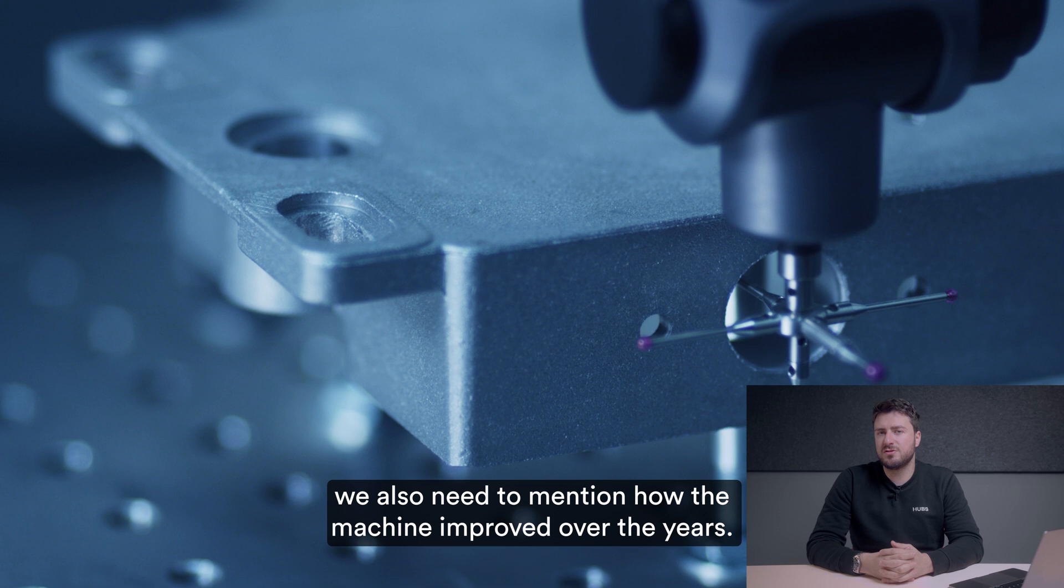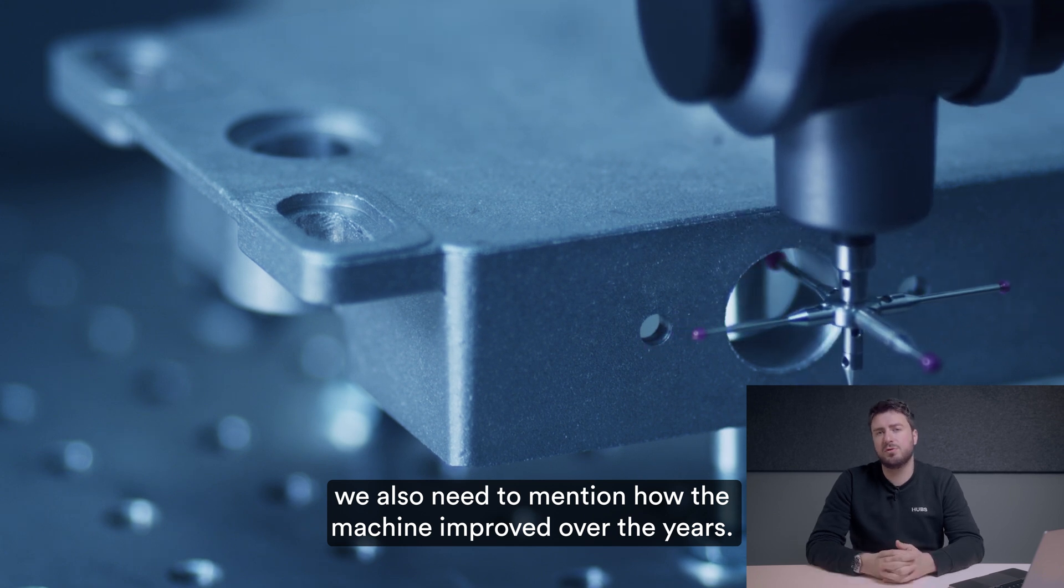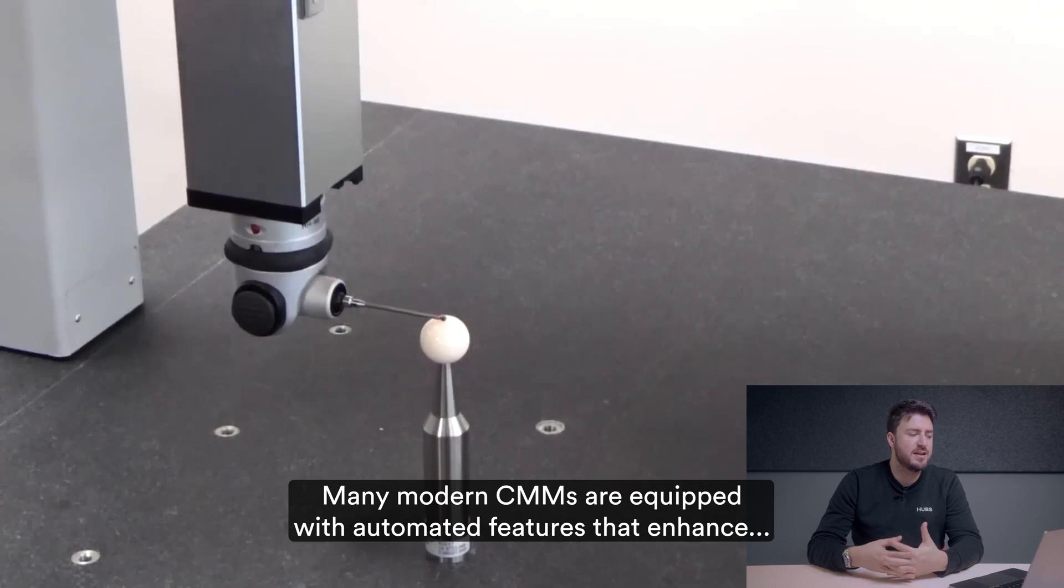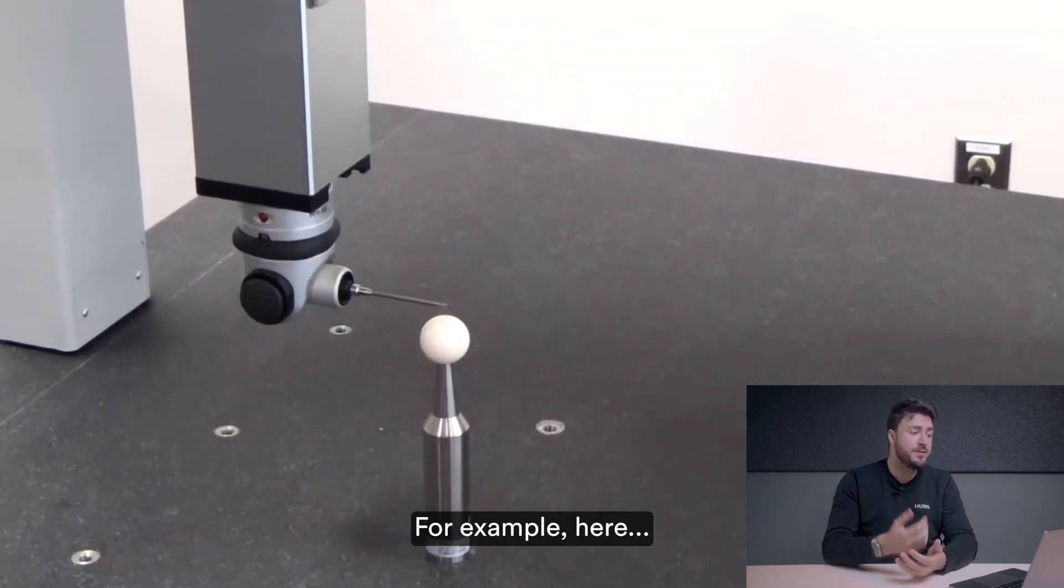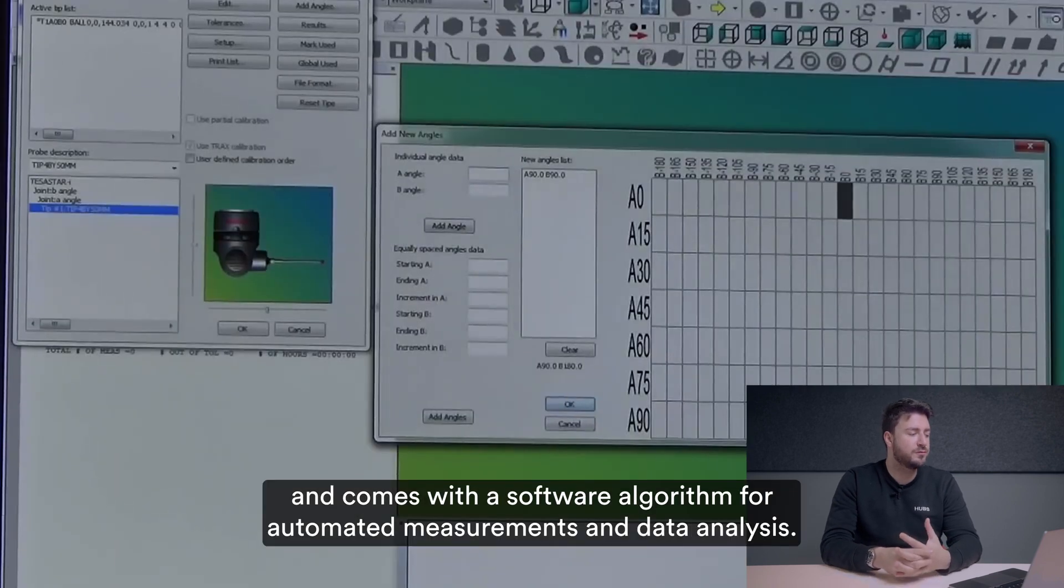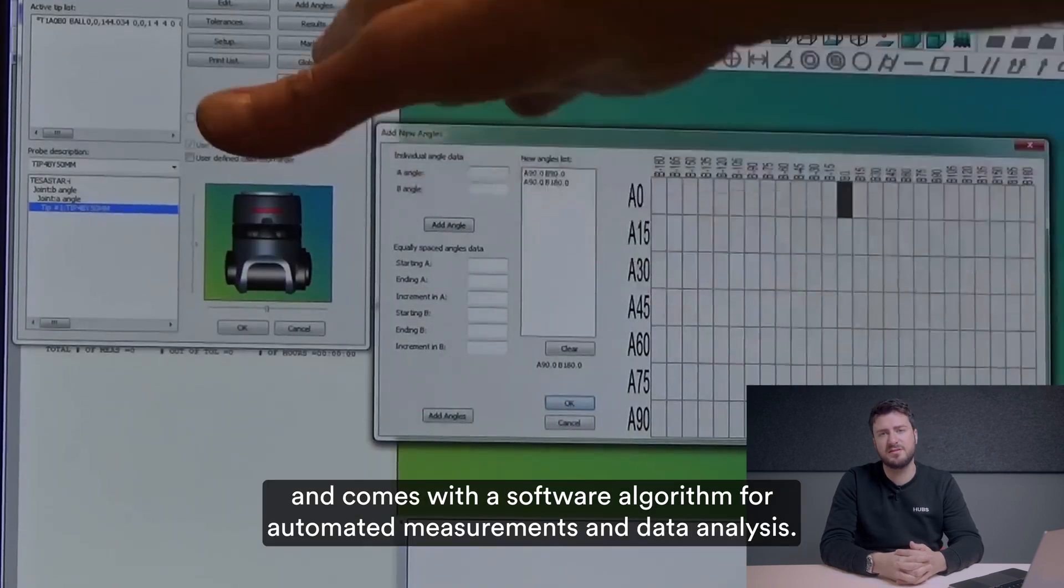When we talk about CMM we also need to mention how the machine has improved over the years. Many modern CMMs are equipped with automated features that enhance efficiency and productivity, including a motorized probe head and robotic arm and comes with software algorithms for automated measurements and data analysis.